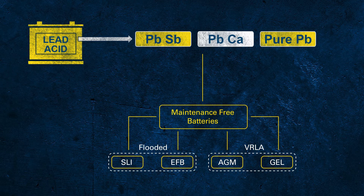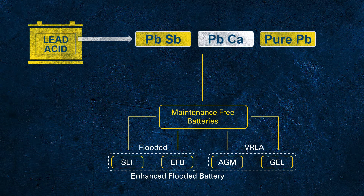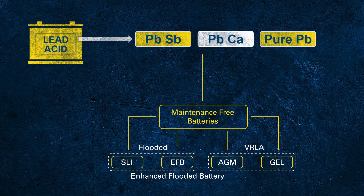Let's shed some light on the abbreviations used here. SLI stands for starting, lights, and ignition, which describes the main duties of a conventional starter battery in a conventional vehicle. EFB stands for enhanced flooded battery. This is not a protected term, so any change applied to an SLI might be called an EFB. Usually EFB indicates a flooded battery with improved cycling capabilities, though as it is still a flooded battery, it is not as robust as VRLA technology.